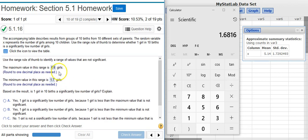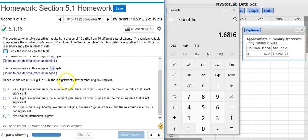So what we're really looking for is something outside this range on the low side, which would be less than the minimum value. One is less than our minimum value of 1.7. So we conclude, yes, this is a significantly low number of girls.